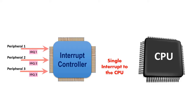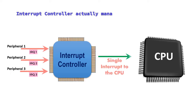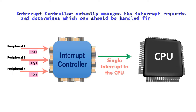Then the interrupt controller receives the interrupt signal from the external device and prioritizes it if multiple interrupts occur simultaneously. The interrupt controller manages the interrupt requests and determines which one should be handled first based on their priority levels.